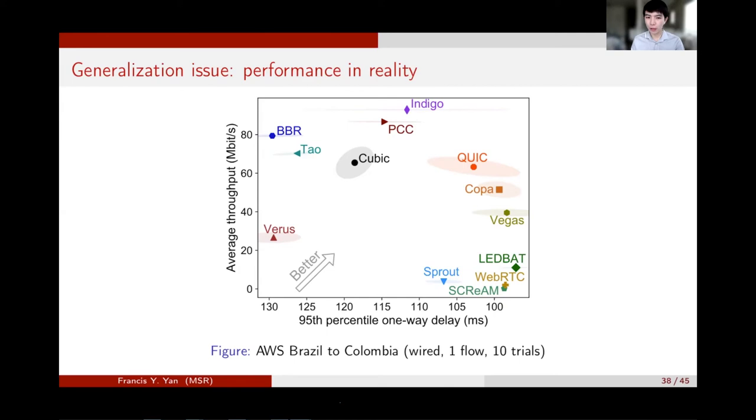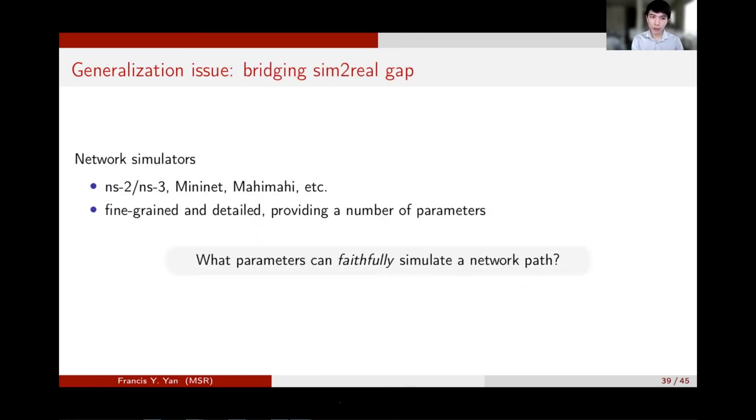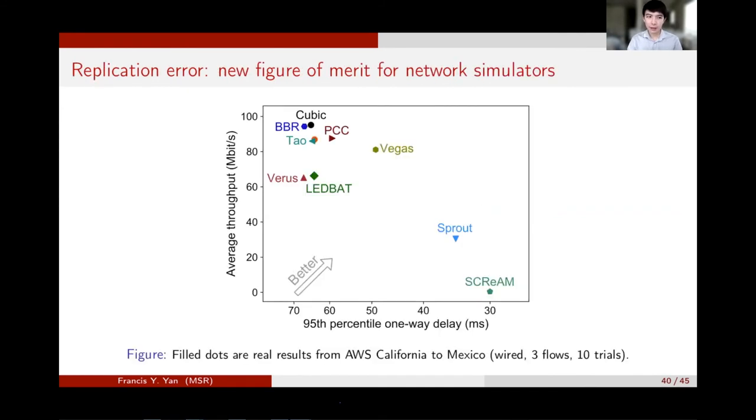So that's our next step. How do we close the sim-to-real gap? The method we tried is to create a more accurate, a more faithful simulator and ask a question. What simulator parameters can faithfully simulate or replicate a given real network path? It's quite surprising that today's network simulators such as Mahimahi provide so many fine-grained parameters, but none of them actually tells you how to choose them.